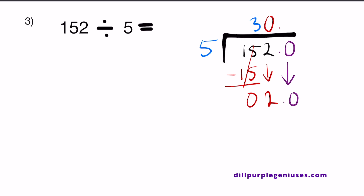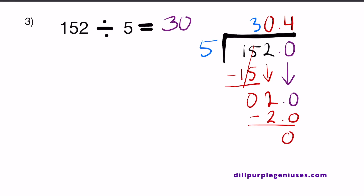How many times does 5 go into 2.0? You can ignore the decimal point temporarily — instead of thinking how many times 5 goes into 2.0, think of 20 divided by 5. 20 divided by 5 equals 4. So 5 goes into 2.0 a total of 0.4 times, meaning 2.0 divided by 5 equals 0.4. 5 times 0.4 equals 2.0, and when you subtract, you get 0. The answer to number 3 is 30.4.